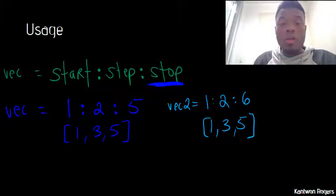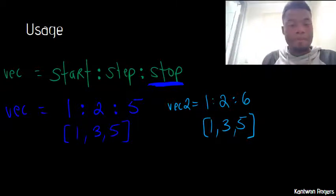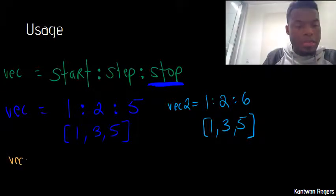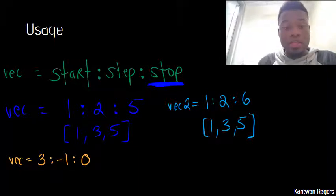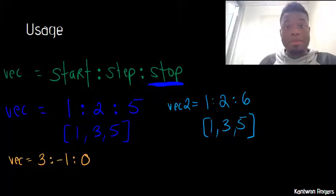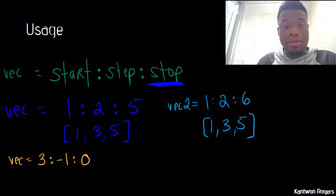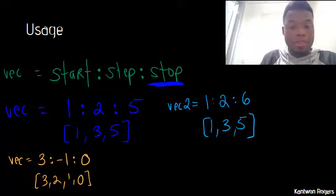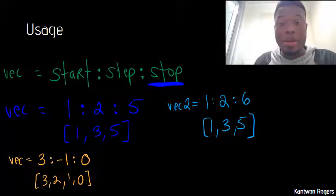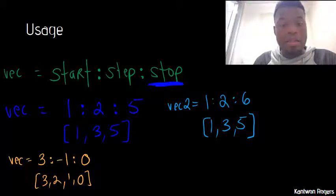So also we don't have to have positive step sizes. We can have something like this. Vec is equal to, let's say three, colon negative one, colon zero. So this is saying I want to start at three, go in steps of negative one back down to zero. So in this case, it would start at three. It will subtract one and get two, subtract one and get one, subtract one and get zero. So that's the vector that would be created through this line of code.